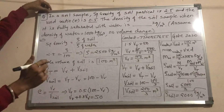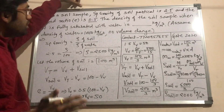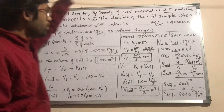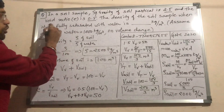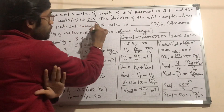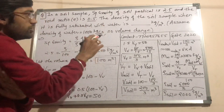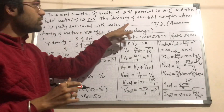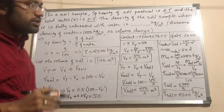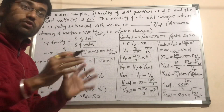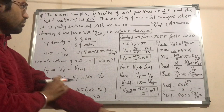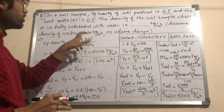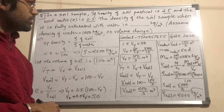In this numerical: in a soil sample, the specific gravity of the soil particle is 2.5 and the void ratio is 0.5. The density of the soil sample when it is fully saturated with water is what you need to calculate. You need to assume the density of water is 1000 kg per meter cube.